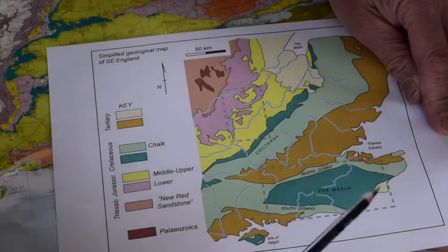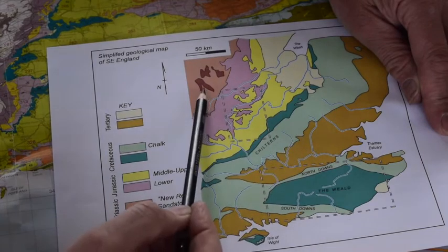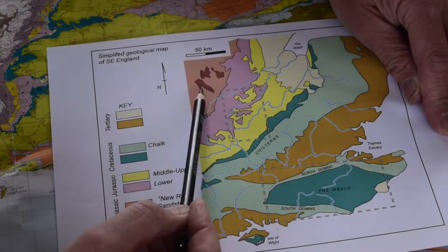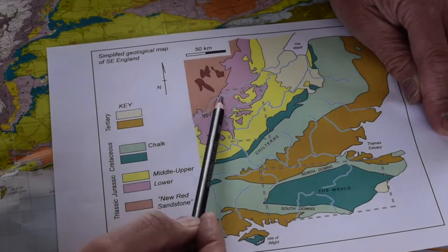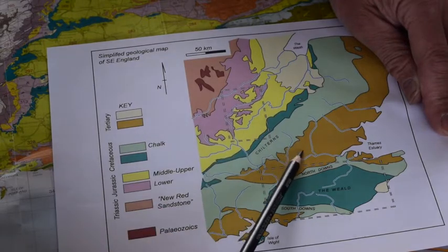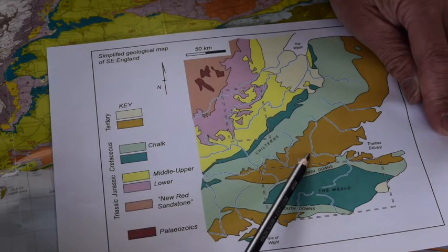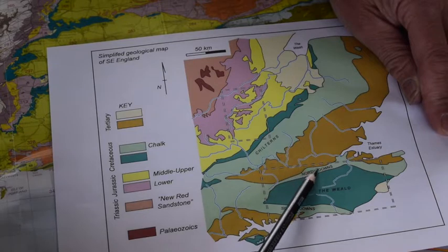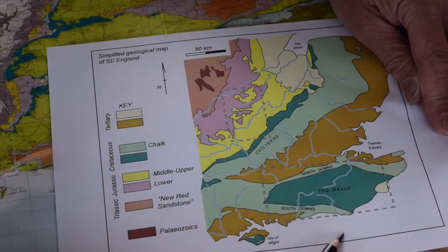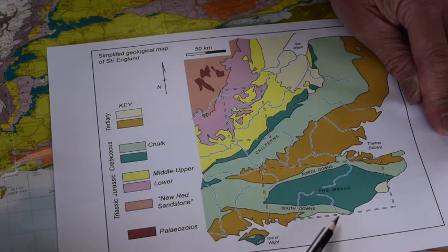To explore these relationships, what we're going to do is sketch a cross section from here in the northwest down across the Chilterns to the London area, and then we'll deflect and come southwards till we hit the English Channel on the south coast.